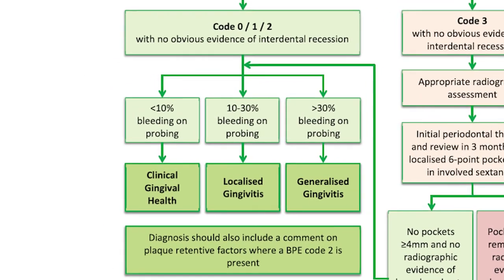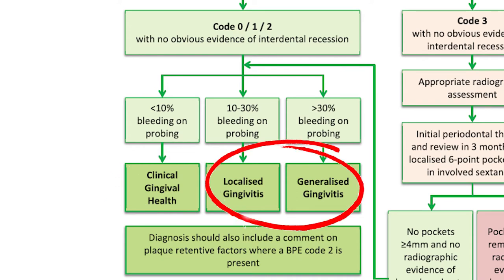A BPE score of zero indicates healthy gums, while one and two would indicate some level of gingivitis, depending on how much bleeding you estimate to have seen.